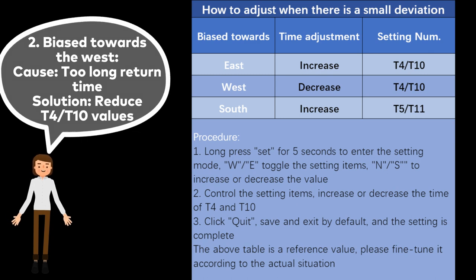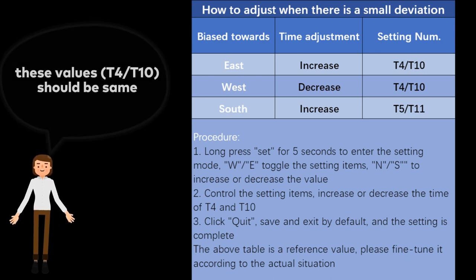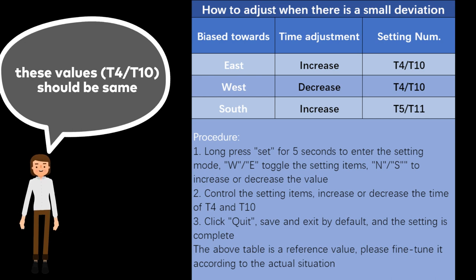2. Bias towards the west, cause: too long return time, solution: reduce T4/T10 values. These values, T4/T10, should be same.